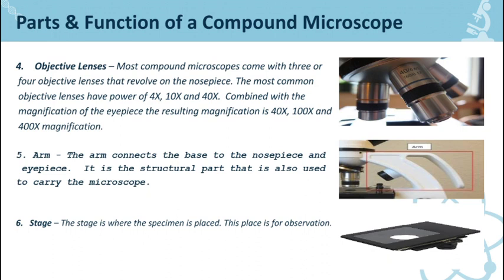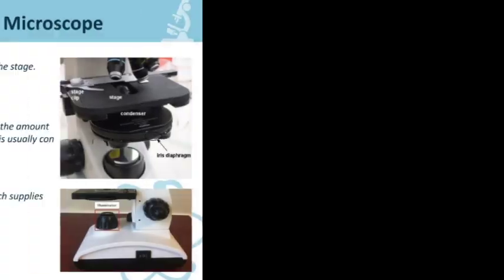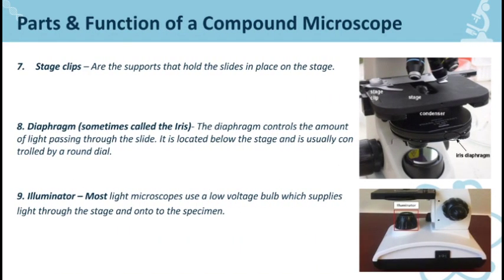Number six is the stage. This is where the specimen is placed for observation. Yung stage naman ay yan yung mismong pinaglalagyan ng lens which has the organisms — the tiny organisms or the object that is being used — para makita natin kung how bigger it looks kapag na-magnify na sya by using the objective lenses.